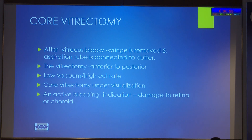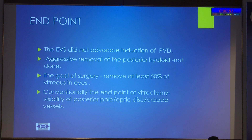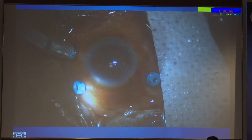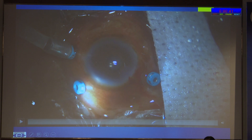EVS did not advocate induction of PVD. The endpoint for core vitrectomy is when you see the posterior pole disc and first-order vessels are visible. Avoid aggressive removal of vitreous. There is a short video showing a case of post-operative endophthalmitis where there is dense vitreous involvement.